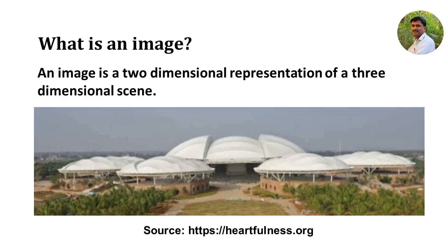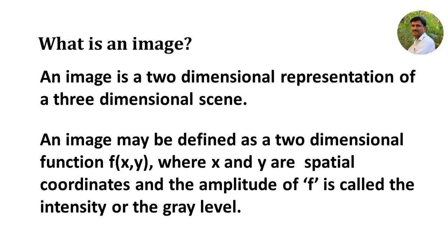The coordinates of this two-dimensional space are the x-coordinate and y-coordinate. In the context of image processing, normally the horizontal axis is termed as the y-coordinate and the vertical axis is termed as the x-coordinate. More formally, an image may be defined as a two-dimensional function f, where x and y are the spatial coordinates and the amplitude of f is called the intensity or gray level.